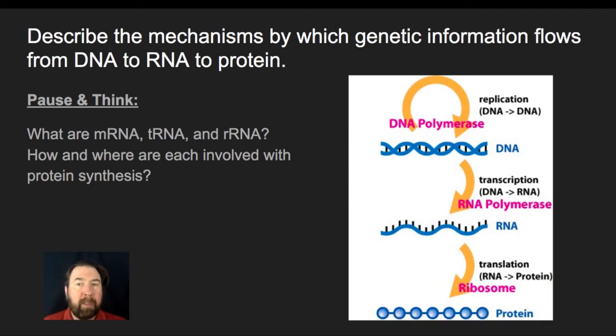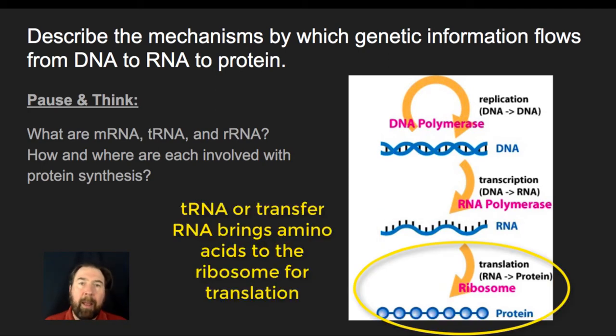tRNA are transfer RNAs, and they're going to bring amino acids to the ribosome that will then correspond to which amino acid is going to be put in what sequence based off of that messenger RNA. On the opposite side of a tRNA from the amino acid is what is known as an anticodon,